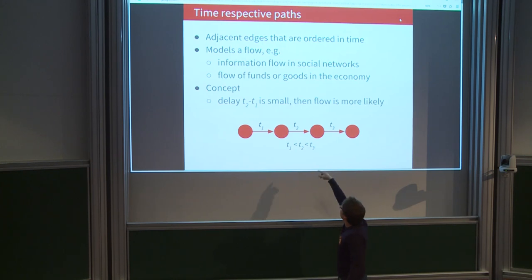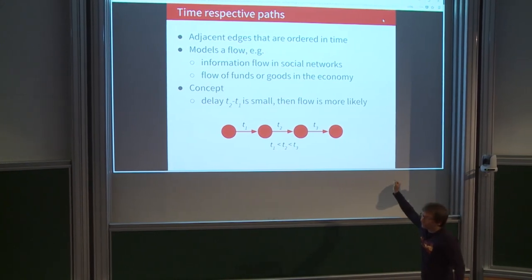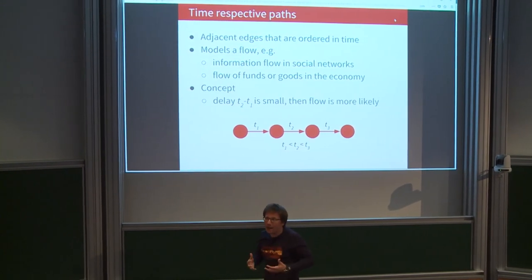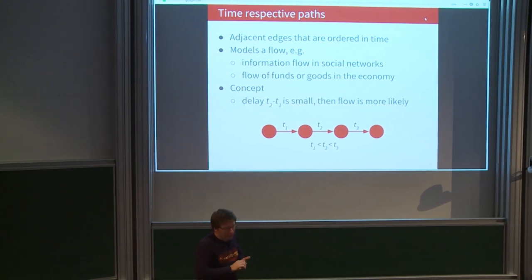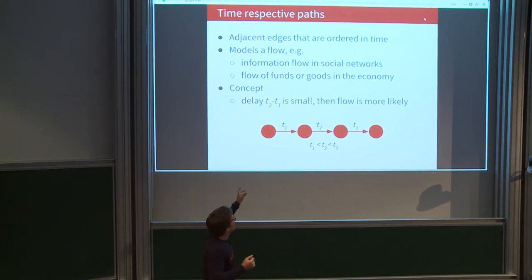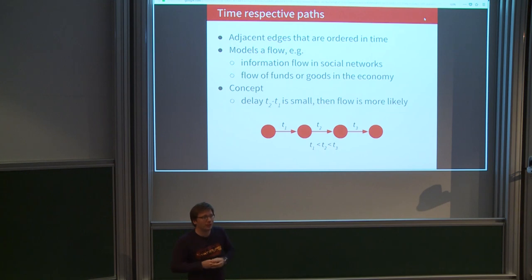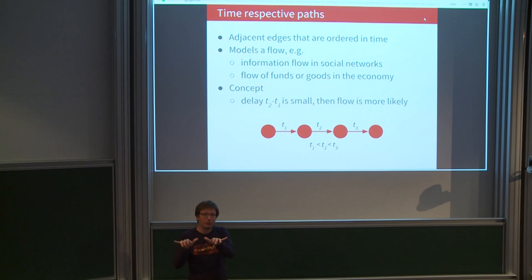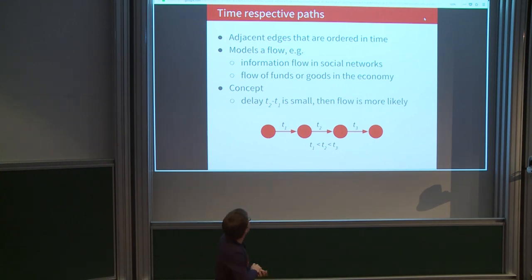Our temporal centrality metric will strongly rely on the concept of time-respecting paths, which are getting more and more attention in current publications. A time-respecting path is nothing but adjacent edges right after each other in an edge stream, where the edges are not just adjacent but also ordered in time. For example, a time-respecting path on Twitter can mean an information flow, or in transaction graphs, adjacent transactions may represent the flow of funds in the economy.